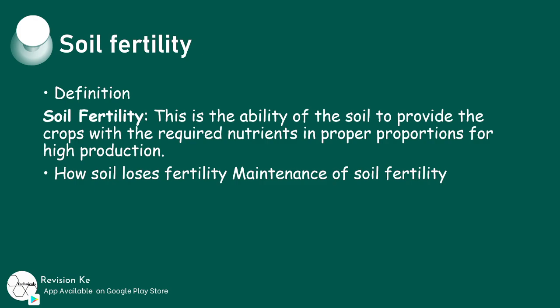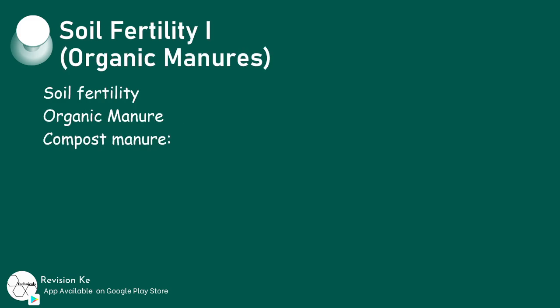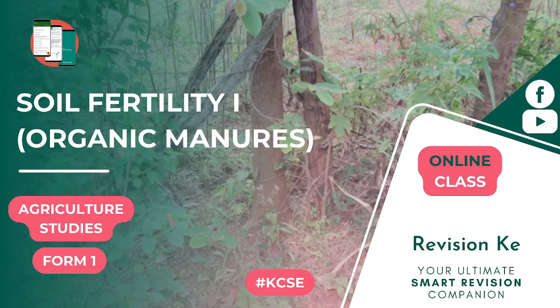Our first objective is to define soil fertility. We are going to explain how soil fertility can be maintained, describe how soil loses fertility, and define and distinguish organic manure, organic matter, manure, and humus.